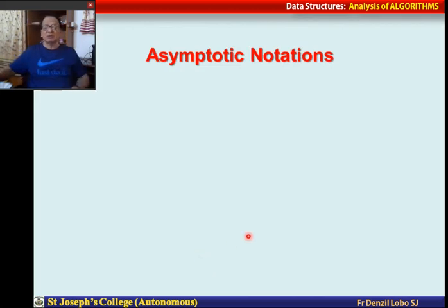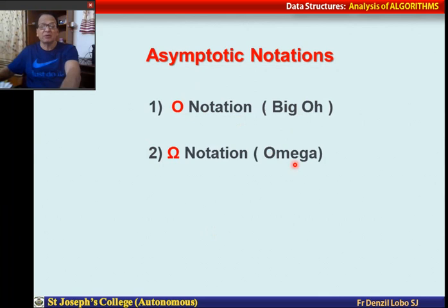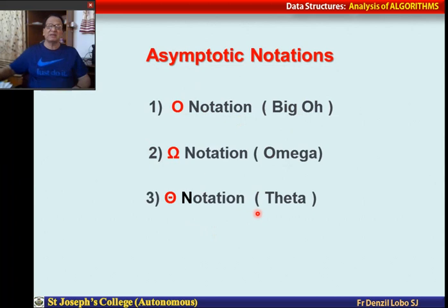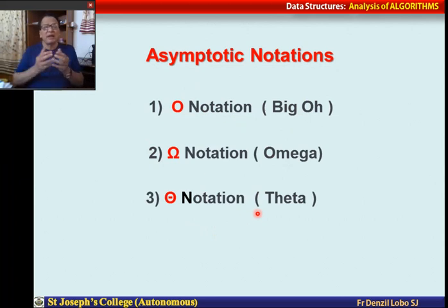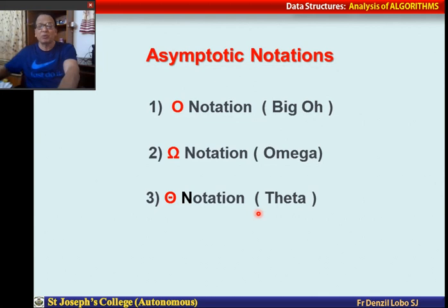For this, we use what are called Asymptotic Notations. We represent complexity using Big O notation, Omega notation, and Theta notation. Using these three notations, we explain the upper bound, lower bound, and average working of a given algorithm.